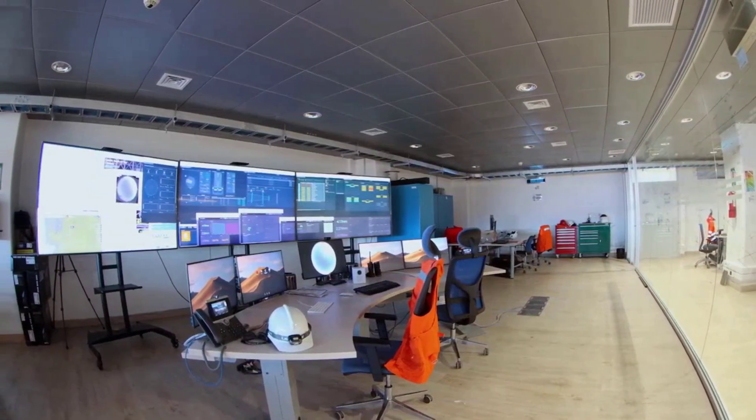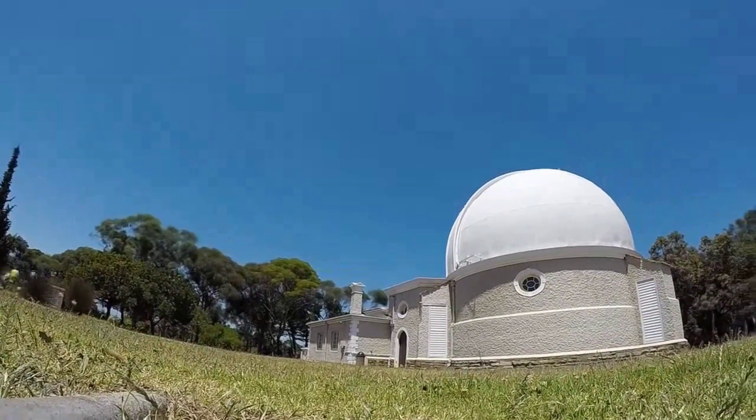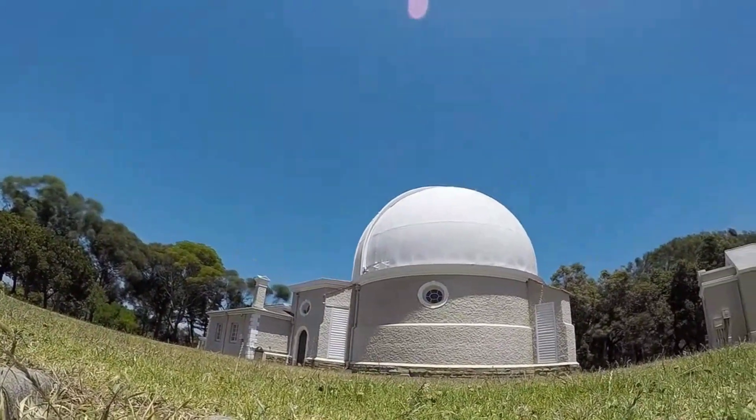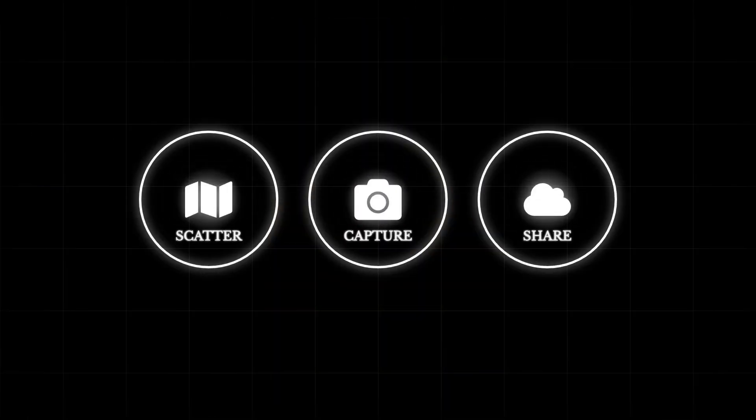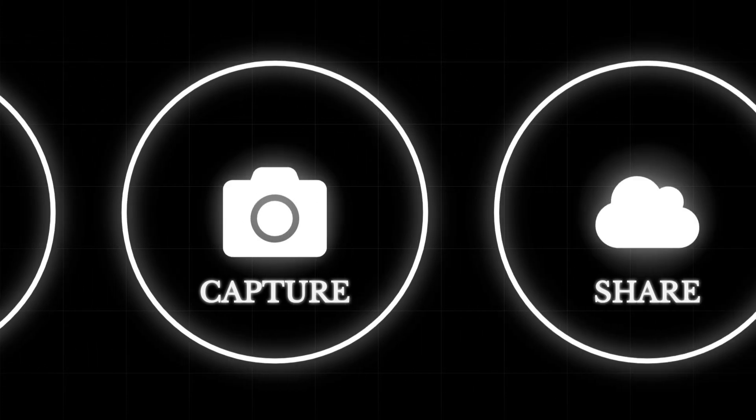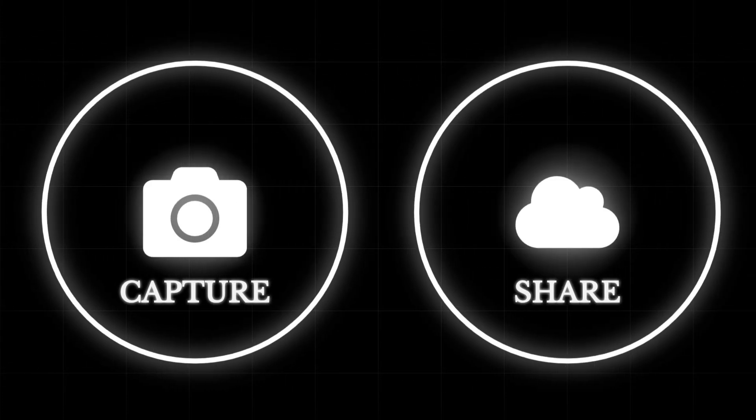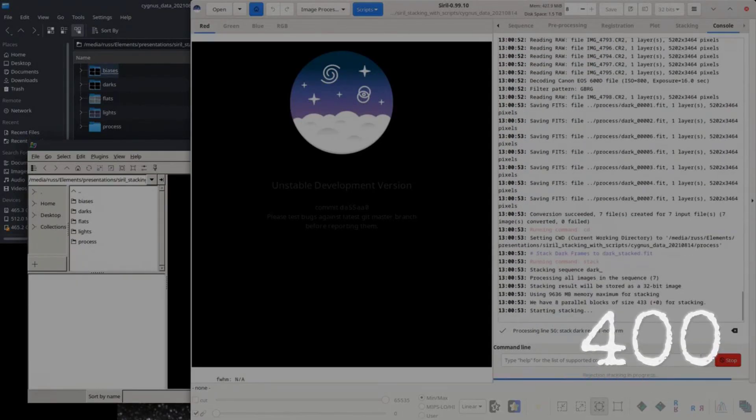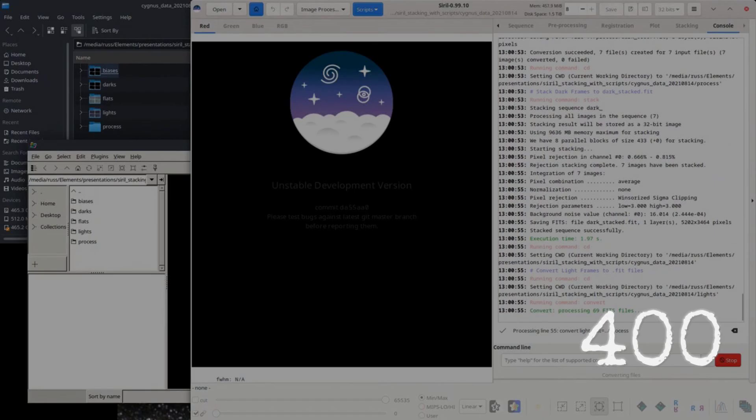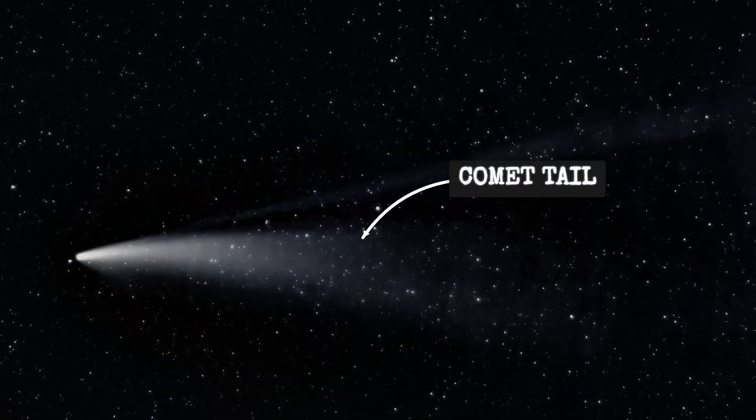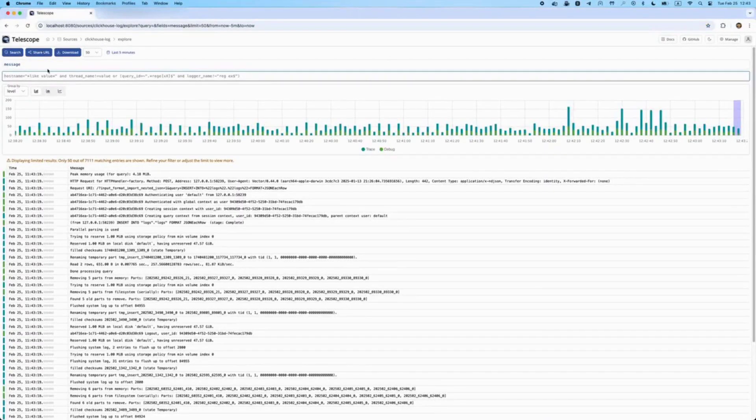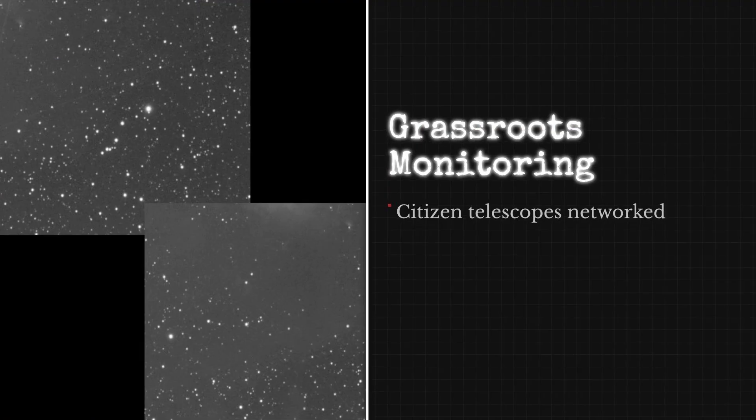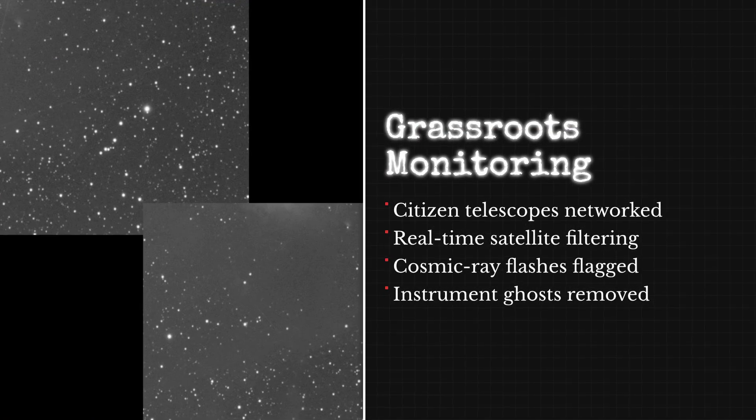Bill Gray's name begins to circulate in private astronomy circles as the blackout takes hold. While official observatories power down, Gray's distributed network of amateur astronomers refuses to sit idle. Their approach is simple: scatter telescopes across latitudes, keep wide-field cameras rolling, and hope for a gap in the glare. Frame stacking becomes the tool of choice, aligning hundreds of noisy exposures to pull out faint signatures that would otherwise drown in sunlight. Each participant uploads raw frames to a shared pipeline, where custom scripts sift for motion, filtering out satellites, cosmic rays, and instrument ghosts.